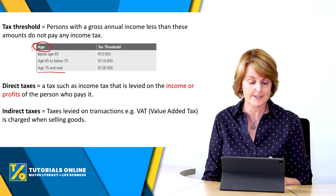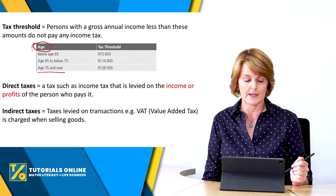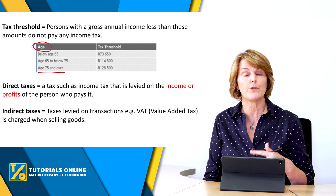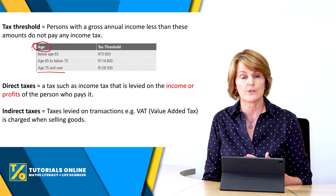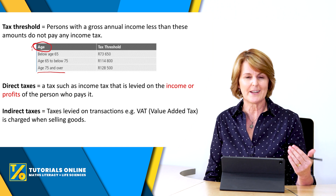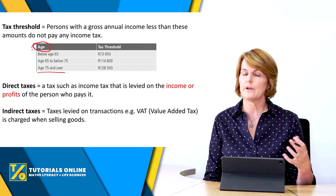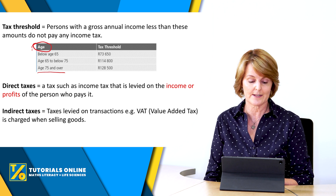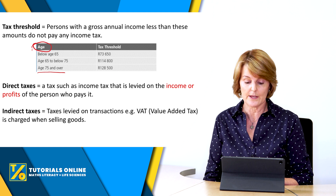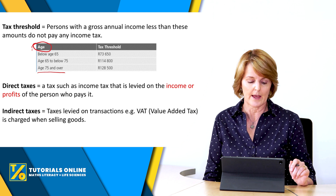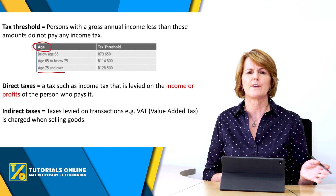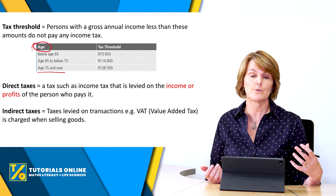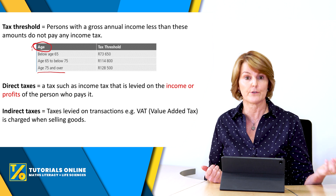You also get two other types of taxes: direct taxes and indirect taxes. A direct tax, such as income tax, is levied on the income or profits of the person who pays it. An indirect tax is levied on transactions — for example, VAT, which is Value Added Tax, and it is charged when selling goods. When you go shopping you have to pay VAT on certain items, and that goes to the government.